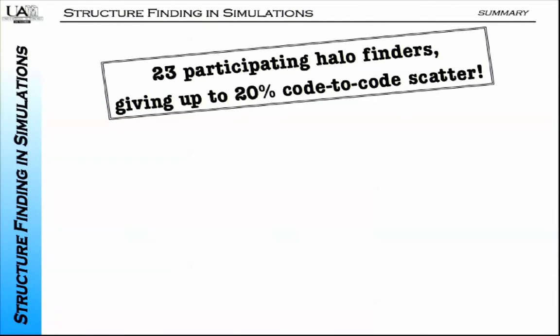As I heard it, I actually like to start immediately with my conclusions, so that you can follow along. If you are interested in the details, read the paper. So: we have 23 different codes that contend—try to, manage to—find structures in these cosmological simulations of structure formation, and that participated in a comparison project.